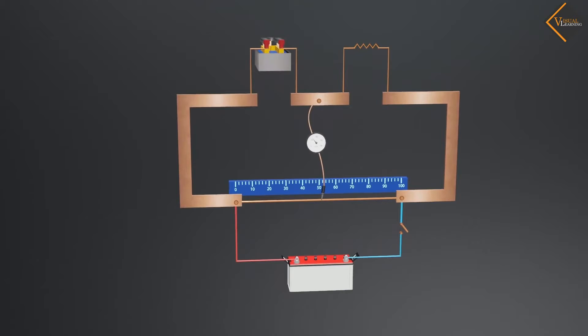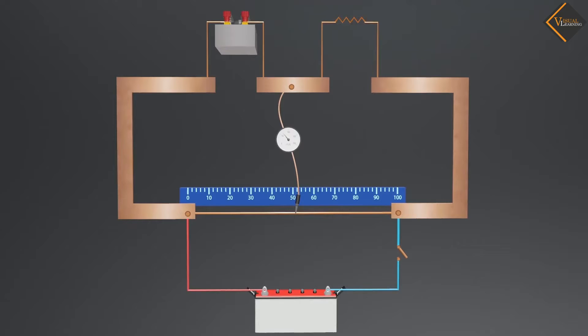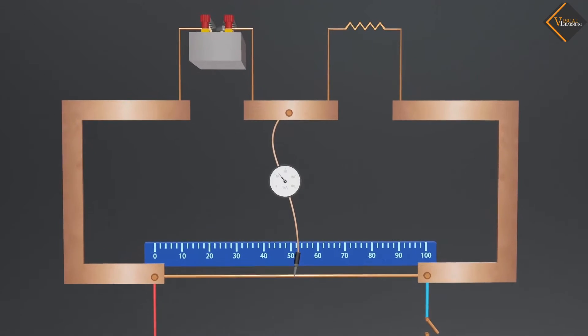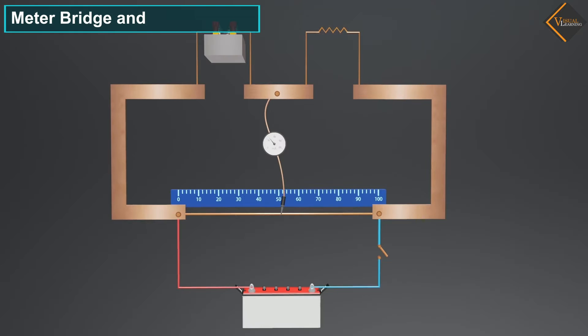The meter bridge is an instrument that works on the Wheatstone Bridge principle and its use is to determine unknown resistances. Now, let's understand what the meter bridge is and how it works.